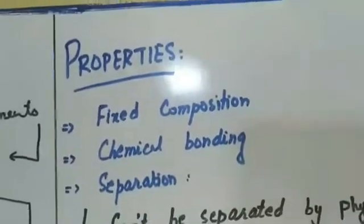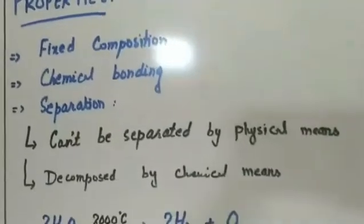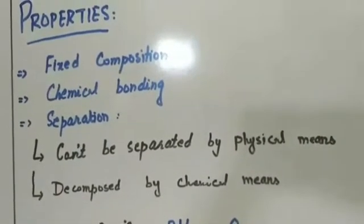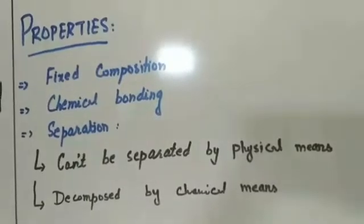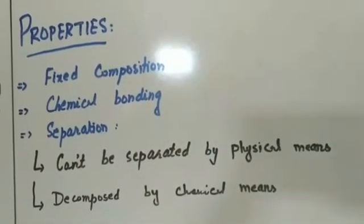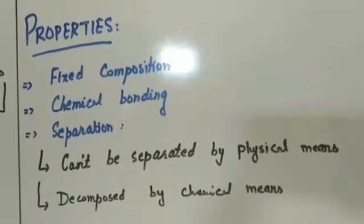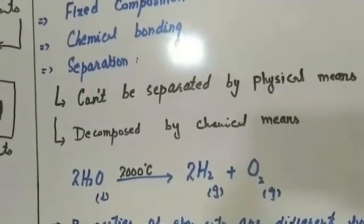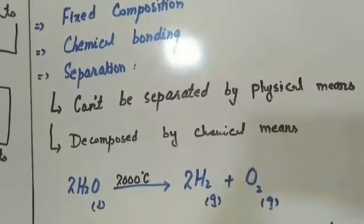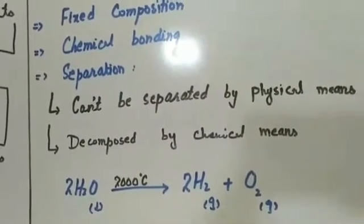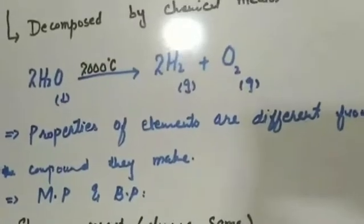Now we will move towards the properties of compounds. The first property is fixed composition. Second, since elements are chemically combined, their separation is difficult. They cannot be separated by physical means such as filtration. Since electrons are involved, they can be decomposed — decomposition means the compound is broken back down into its constituent elements. This requires a chemical means. For example, splitting water into hydrogen and oxygen requires about 2000 degrees centigrade of energy to break the water molecule.